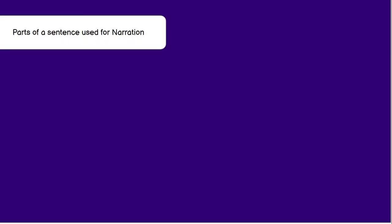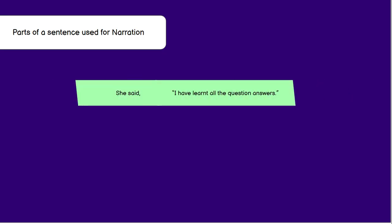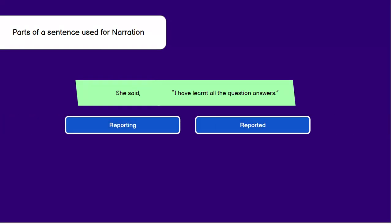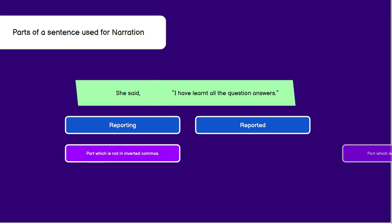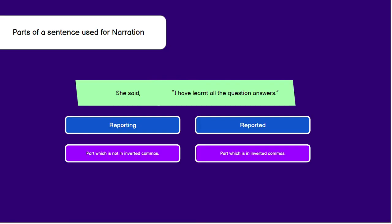Let's see the parts of a sentence used for narration. When we use narration, there are two parts. 'She said' is one part of the sentence which is outside the quotation marks or inverted commas, and 'I have learnt all the question answers' is inside the inverted commas. 'She said' is the reporting part of the sentence, and 'I have learnt all the question answers' is the reported part. The reporting part is not in inverted commas, and the reported part is inside the inverted commas.